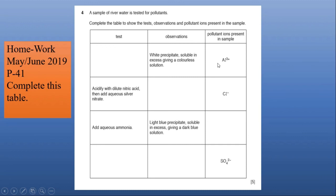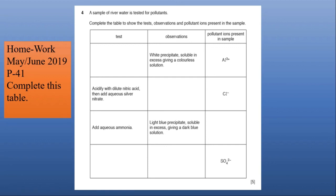For aluminium ion: white precipitates are formed, soluble in excess — the test is to add aqueous sodium hydroxide. For chloride: the test uses dilute nitric acid and aqueous silver nitrate — the observation is white precipitate. When aqueous ammonia is added and a light blue precipitate forms, soluble in excess giving a dark blue solution, you can identify the cation as copper ion (Cu²⁺). The last entry requires writing the test and observation for sulfate ion. This question is worth five marks. Practice makes perfect — I hope you have understood the topic, thank you.